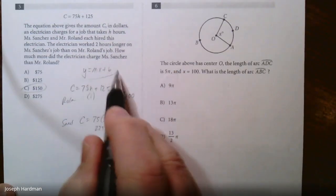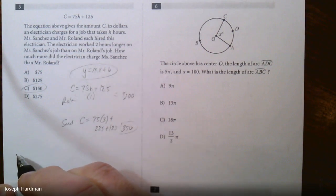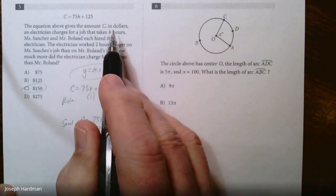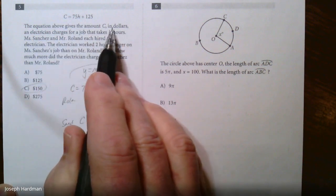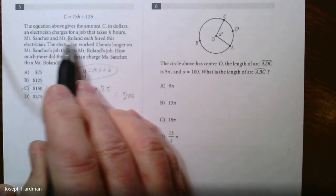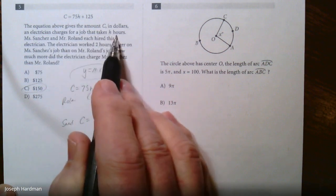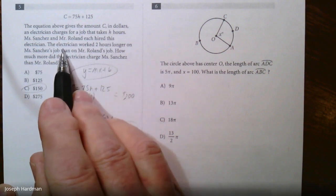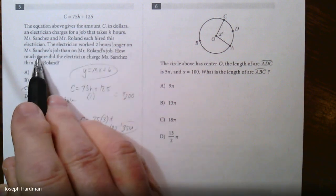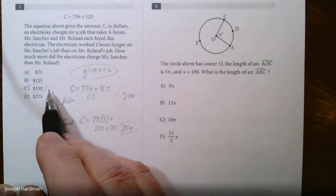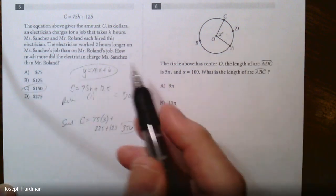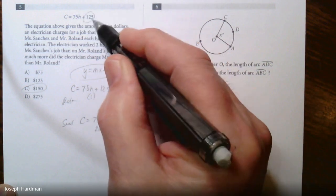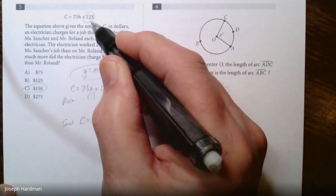Storing problems that look like this, y equals mx plus b, that's what it looks like right there. I don't care what the letters look like. It says the equation above gives the amount C in dollars that electrician charges for a job that takes h hours. Miss Sanchez and Mr. Rowland each hired, blah blah blah. Now the problem says the electrician worked 2 hours longer on Miss Sanchez's job than on Mr. Rowland's. How much more did the electrician charge? Just first thing you just know that 125 is what the electrician charges just to come out to your house.